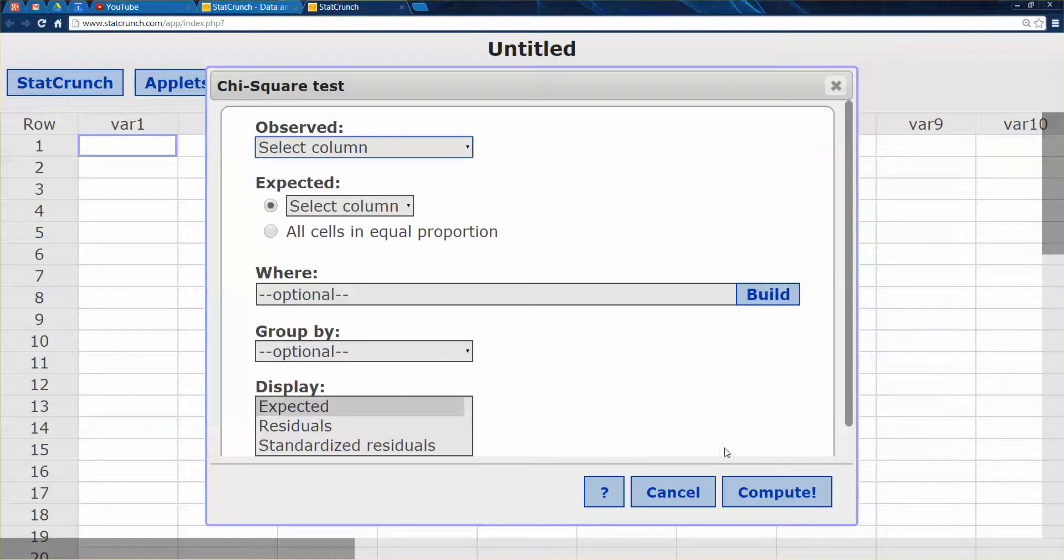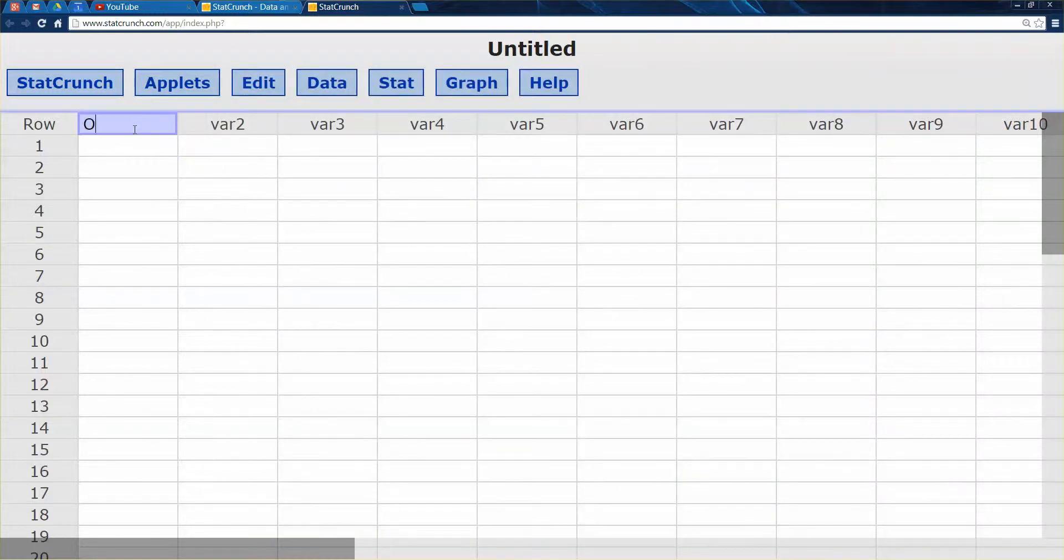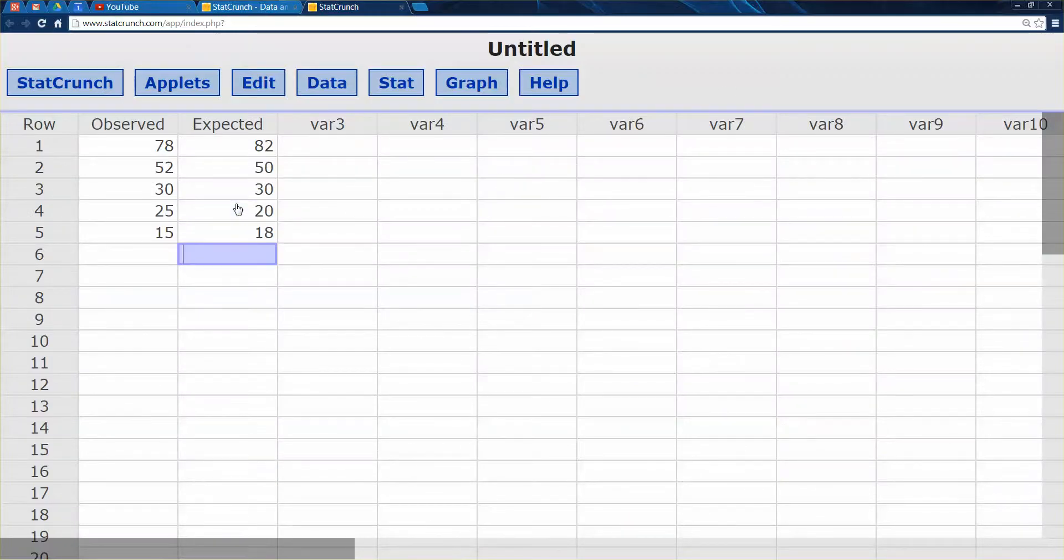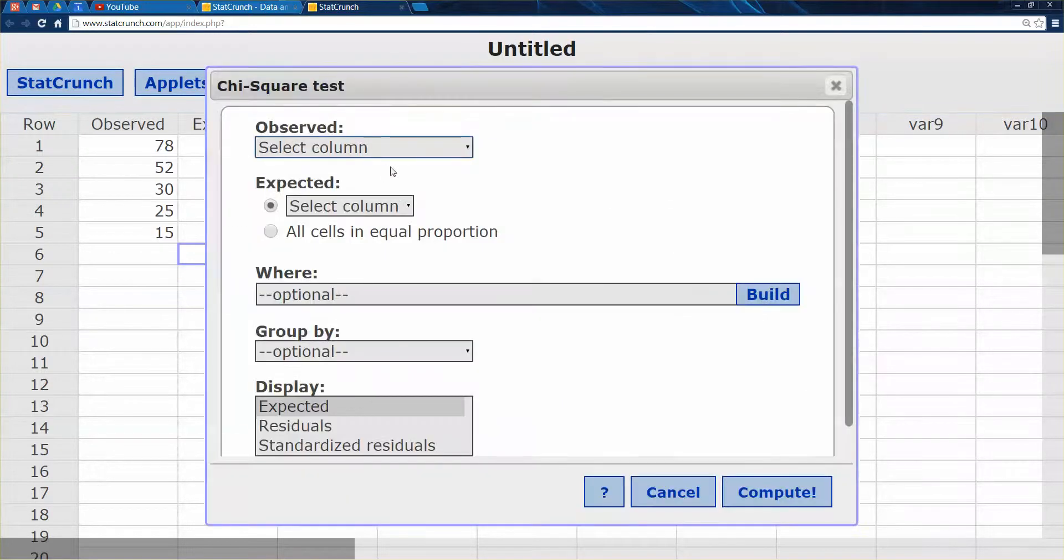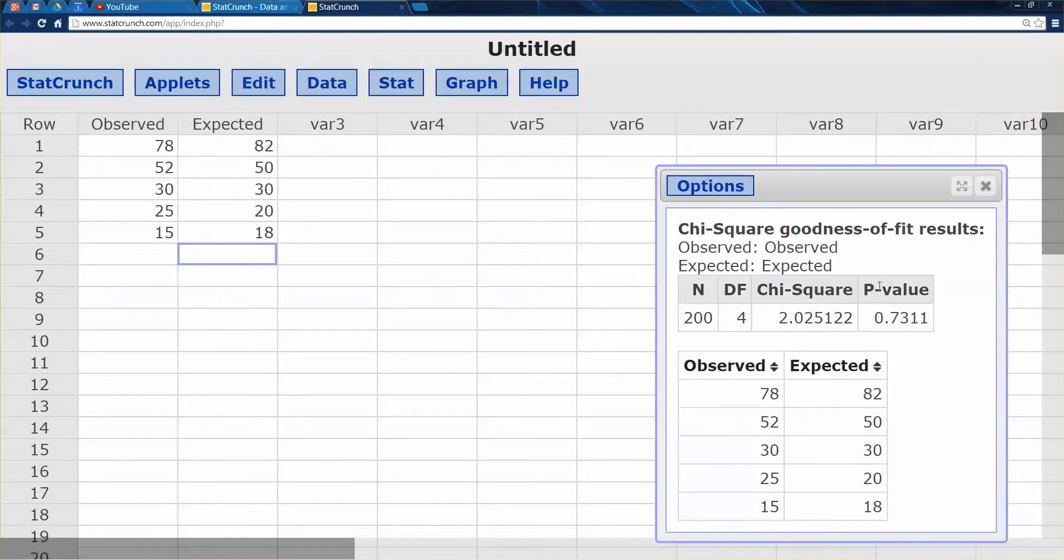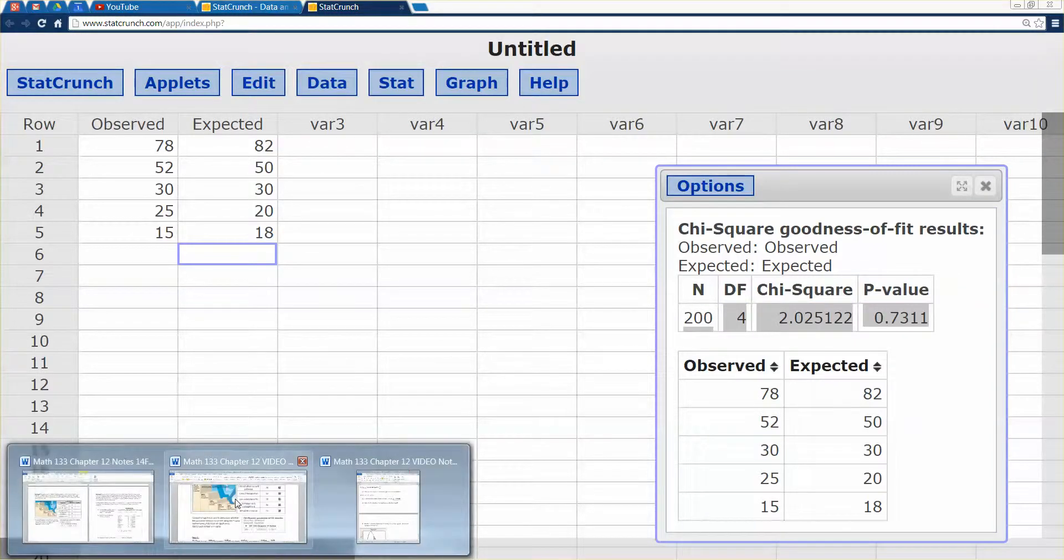We'll have to type our observed in here. I'll do expected over here. Let me type those numbers in. It's really easy—you just type them the same way you did before. 30, 25, 15, and then expected would be the 82, 50, 30, 20, and 18. Stats, goodness of fit, chi-square test. My observed is in the observed column, my expected is in my expected column. I don't need any of this stuff. Let me click compute and see what happens. There we have it—0.7311 and 2.025 right there, same output that I put into the problem right here.